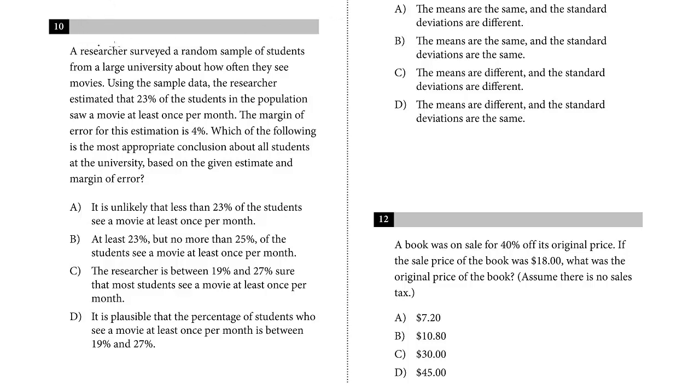We're on problem 10. A researcher surveyed a random sample of students from a large university about how often they see movies using the sample data. The researcher estimated that 23% of the students in the population saw movies at least once per month. The margin of error for this estimation is 4%. Which of the following is the most appropriate conclusion about all the students at the university based on the given estimate and the margin of error?